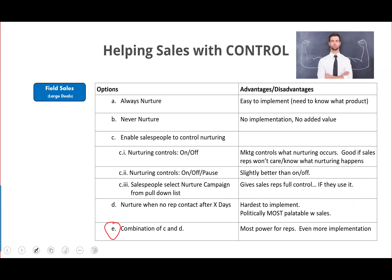Of course, there are combinations of these. What companies will often do is implement these things in phases — for example, doing the activity-based approach in phase one and then implementing campaign selection in phase two, or reversing those.